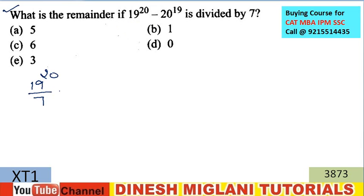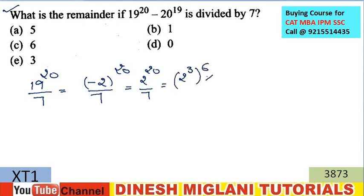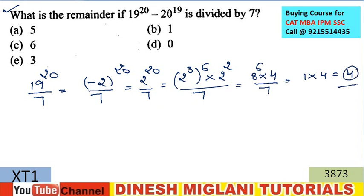I have to find the remainder. I make the pair: 7 × 3 = 21, so 19 ≡ -2 (mod 7). So it becomes (-2)^20 divided by 7, which equals 2^20 divided by 7. I then write 2^20 as (2^3)^6 × 2^2. Since 2^3 = 8, and 8 divided by 7 gives remainder 1, we get 1^6 × 4 = 4. So the remainder of 19^20 divided by 7 is 4.